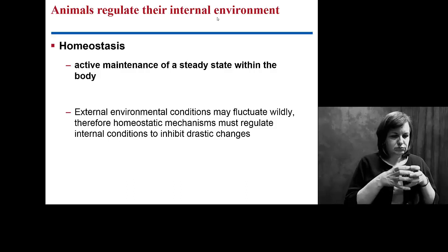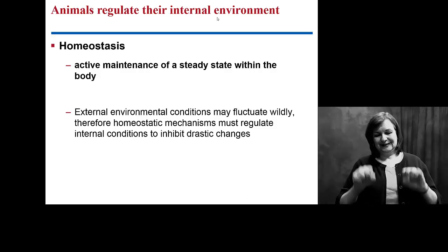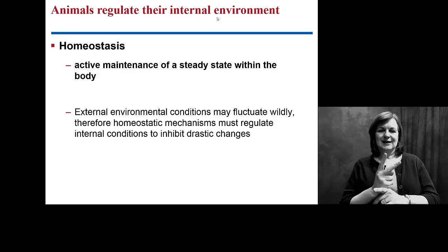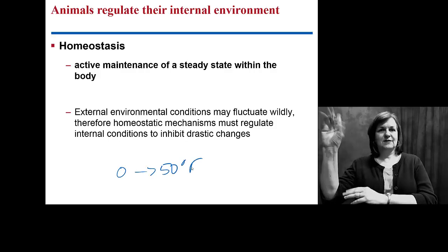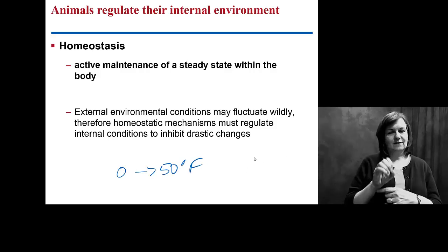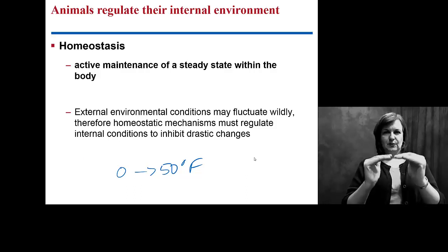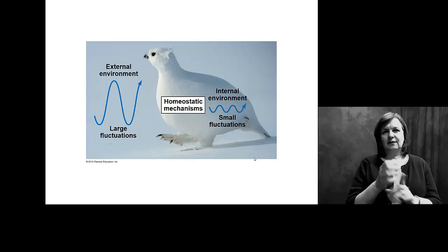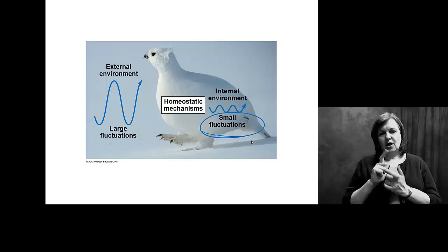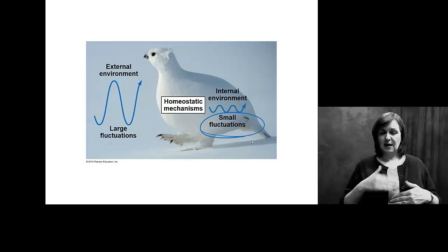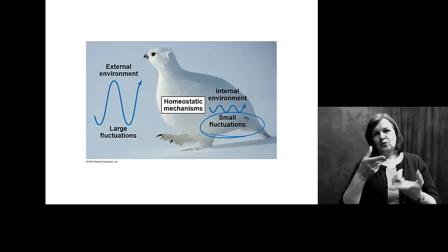If you were a closed system, you'd be much easier to maintain. But with external contributions, we have to maintain homeostasis. When the temperature goes from 0 to 50 degrees outside in a given day, your body temperature can't fluctuate 50 degrees as well. We have to minimize these extreme external conditions and make sure your internal environment only sees very, very small fluctuations. We can deal with tiny changes — we do not deal well with huge internal changes.